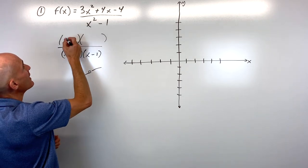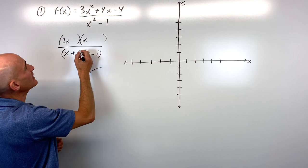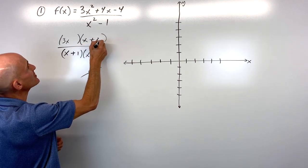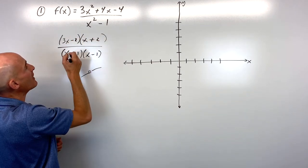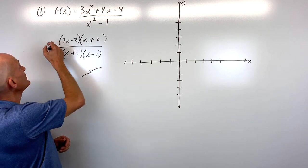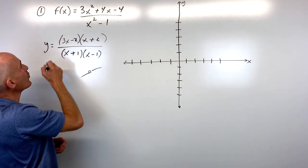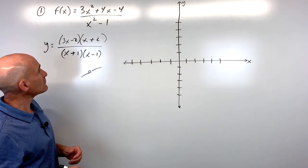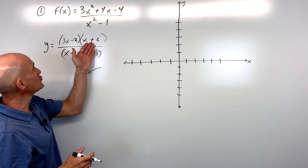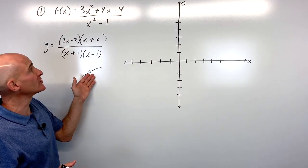Factoring the numerator, you can see it factors to (3x-2)(x+2). The denominator factors to (x+1)(x-1). There's nothing that cancels numerator and denominator, so we don't have any holes in the graph.